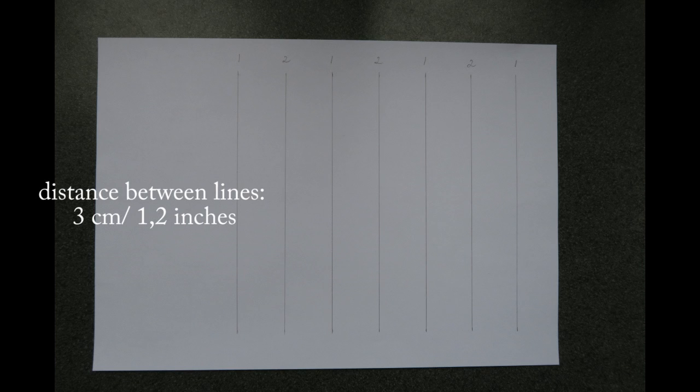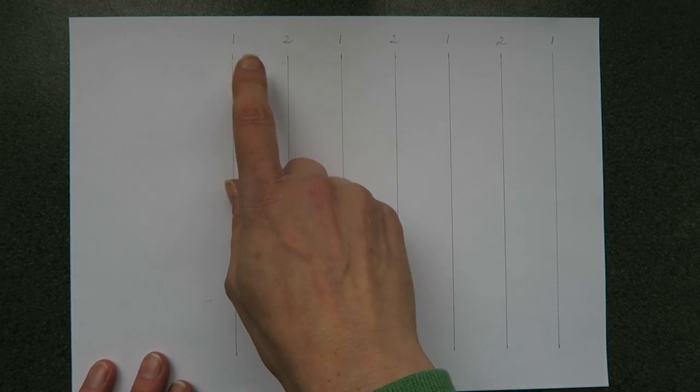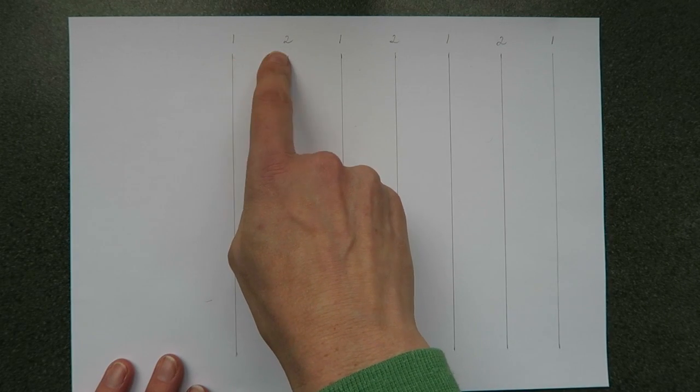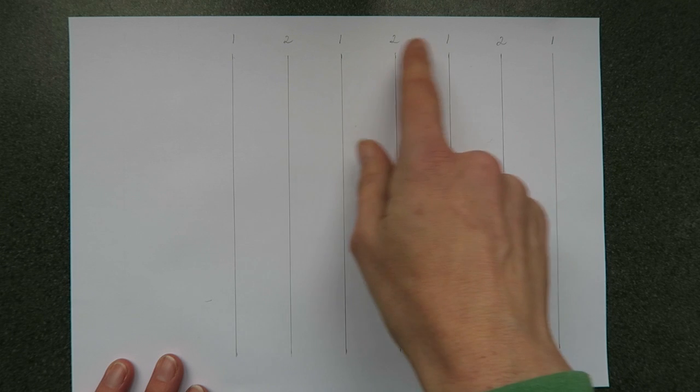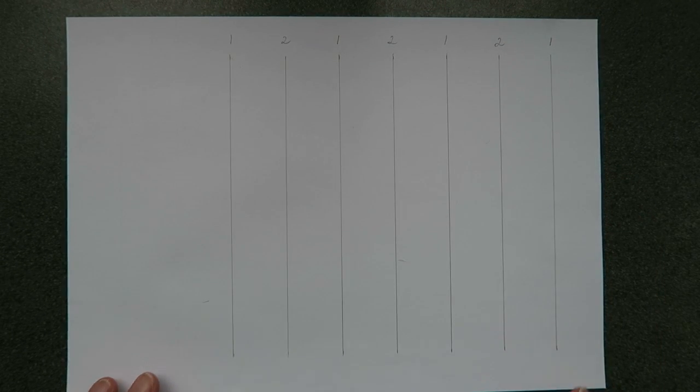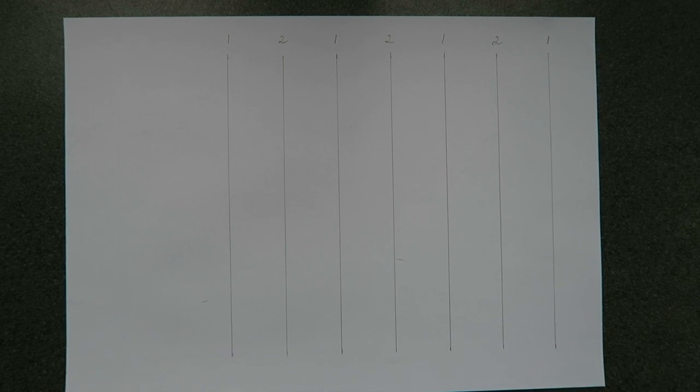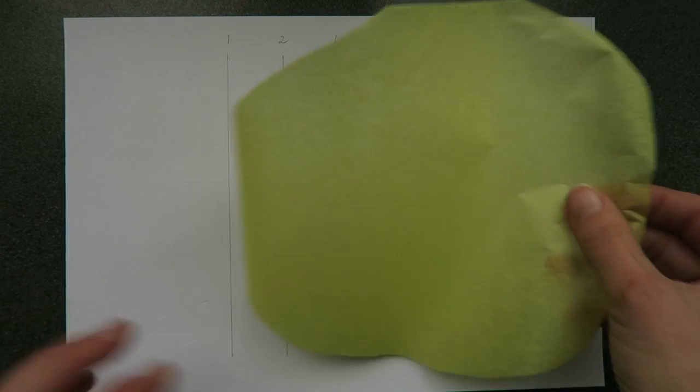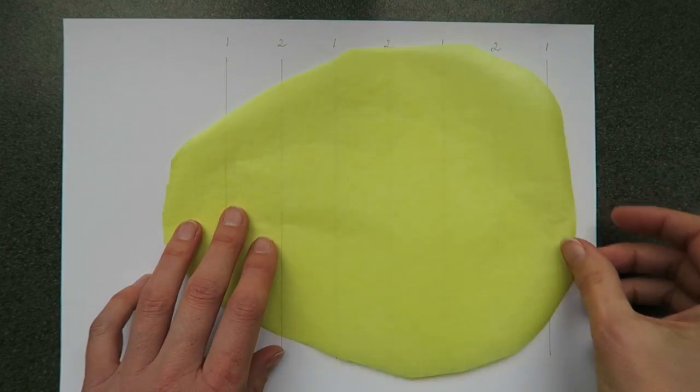Start by making a guiding background. All lines are parallel. You can see they are numbered 1, 2, 1, 2, 1, 2, 1. Always start with a 1 and end with a 1. You will need those lines to know where to glue.